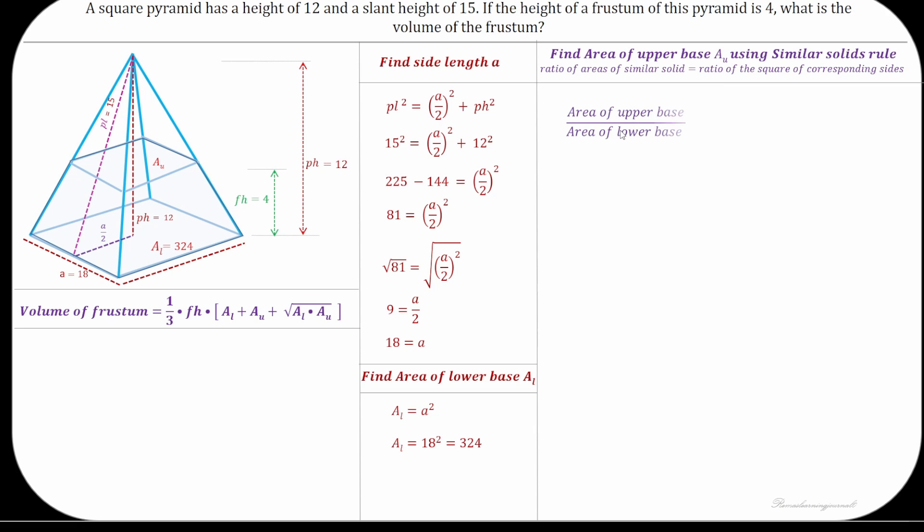As per similar solid rule, the ratio of upper base area to lower base area is equal to the square of height of top pyramid to height of full pyramid.